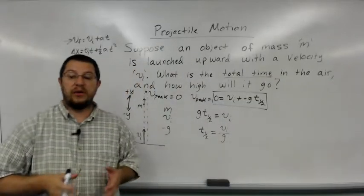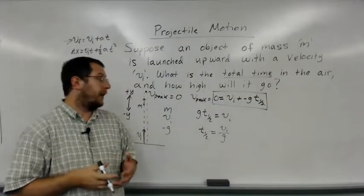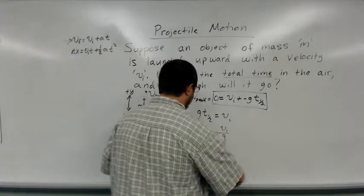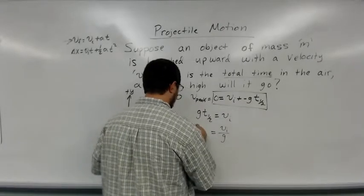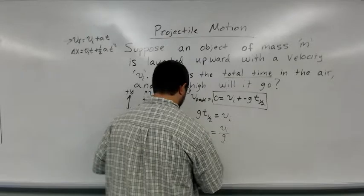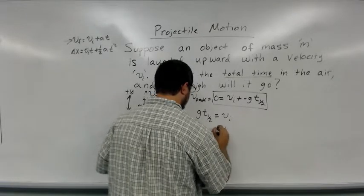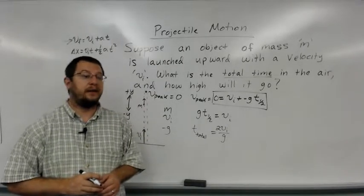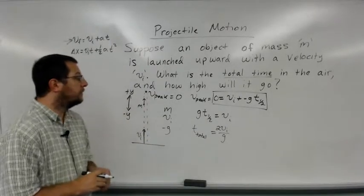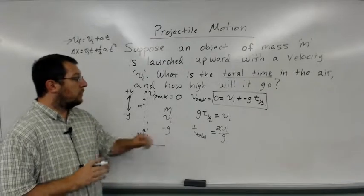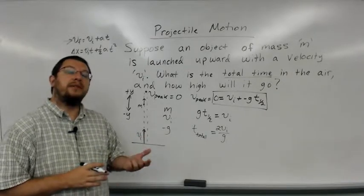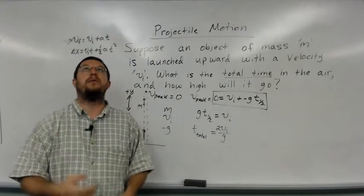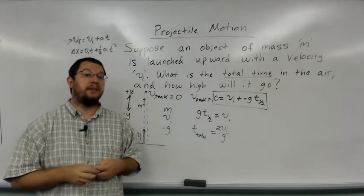So, if I want to find the total flight time, how would I do that? Well, if this is half of the flight time, then my total flight time is just twice the velocity divided by the gravity. Divided by the gravitational acceleration. And so, that is how you can find the total time of a projectile, if you launch it straight upward and you know the speed that you launch it with.